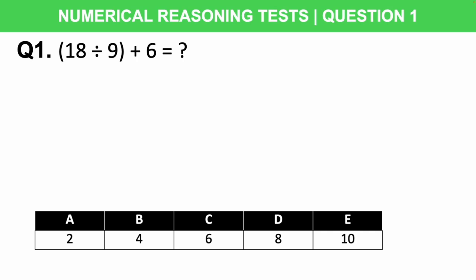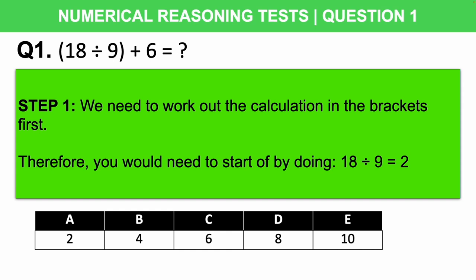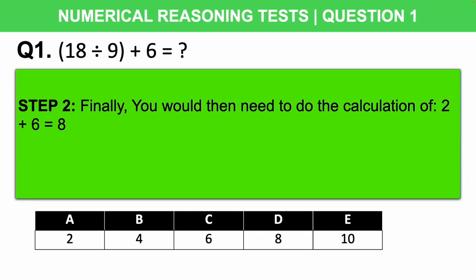Let's work this one out together. Step one: we need to work out the calculation in the brackets first — we always work out brackets first. So start by doing 18 divided by 9, which gives us 2. Then do 2 plus 6, which gives us 8. The correct answer is D: 8.